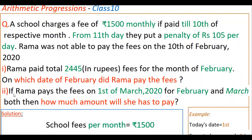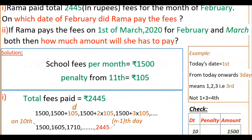The next question is: if Rama pays the fees on 1st March 2020 for both February and March, how much total amount will she have to pay? Since she is paying March fees before the 10th, only 1500 rupees applies for March. But for February, she must pay the penalty because she is paying the February fees for the first time on 1st March.